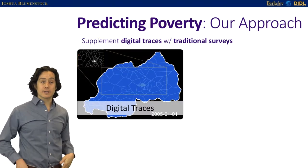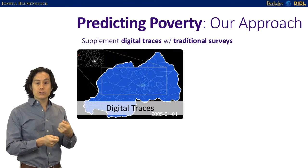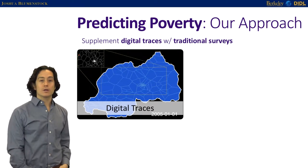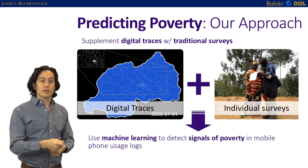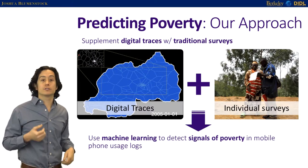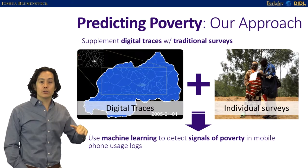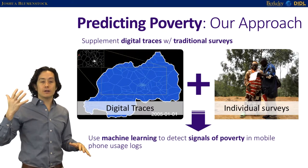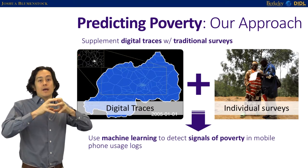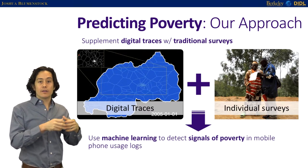Specifically, to measure and estimate poverty, we're going to connect digital trace data — the data generated when people use their mobile phones, the transaction logs, the digital exhaust of mobile phone use — with data we painstakingly collect through surveying people. We'll either go to the field in Rwanda or make phone calls to people using their phones. We'll merge these two datasets and use machine learning to identify the signals of poverty and wealth that exist in the mobile phone data.